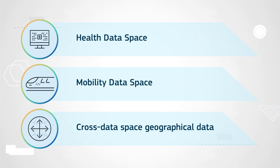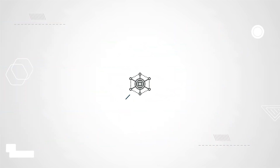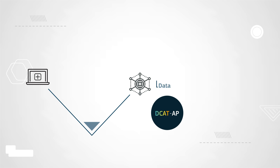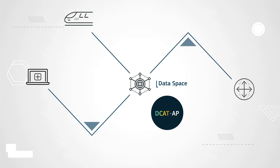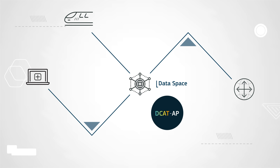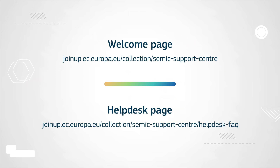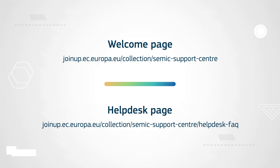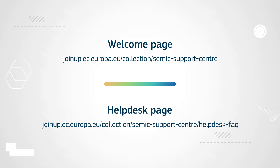These examples showcase the enormous versatility of DCAT-AP. The successful use of DCAT-AP in data spaces will enable interoperability, breaking down any existing silos to drive Europe's competitiveness in the modern data market. If you want to learn more about DCAT-AP and data spaces and the levels of support that CEMIC can provide, you can visit the CEMIC Support Centre where you will find more information, resources and contacts.